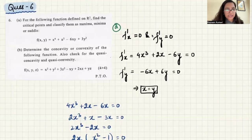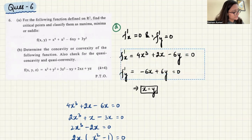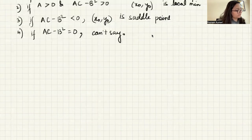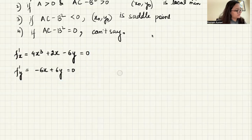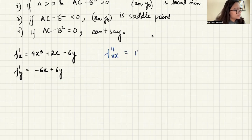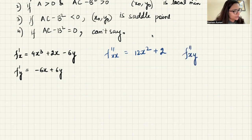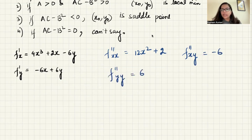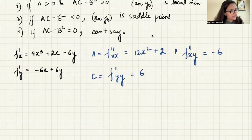Let's compute a, b, c. These are the first derivatives. f''xx = 12x² + 2. f''xy = −6. f''yy = 6. So a = 12x² + 2, b = −6, and c = 6.